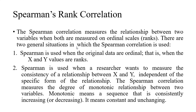You can use it for brands, or for people ranking their qualities or abilities. Spearman is also used when a researcher wants to measure the consistency of a relationship between X and Y, independent of the specific form of the relationship. The Spearman correlation measures the degree of monotonic relationship between the two variables. Monotonic means a sequence that is consistently increasing or decreasing — it means constant and unchanging.